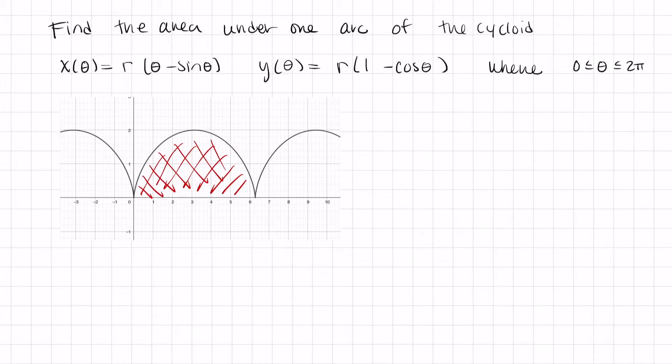Okay, so let's do some calculus. The formula for area is the integral from A to B of Y of T, X prime of T, DT, where A and B are the lower and upper bounds, respectively, on T.